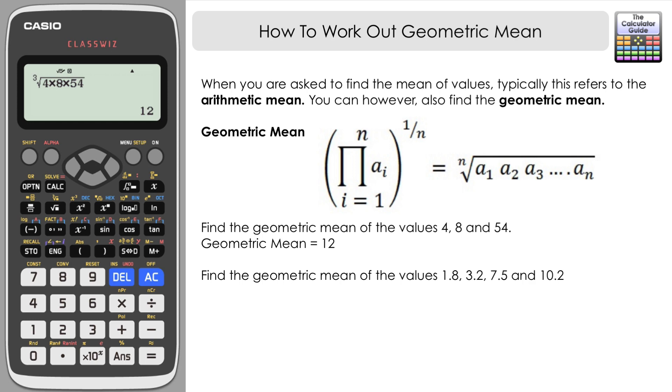So I'm going to use the second variation of the formula this time. I'm going to open a set of brackets and multiply together the values that we have. So 1.8 times 3.2 times 7.5 times 10.2, and I'm going to close the brackets and we'll raise that to the power where we have four values. So it's to the power of one over four, to the power of a quarter.